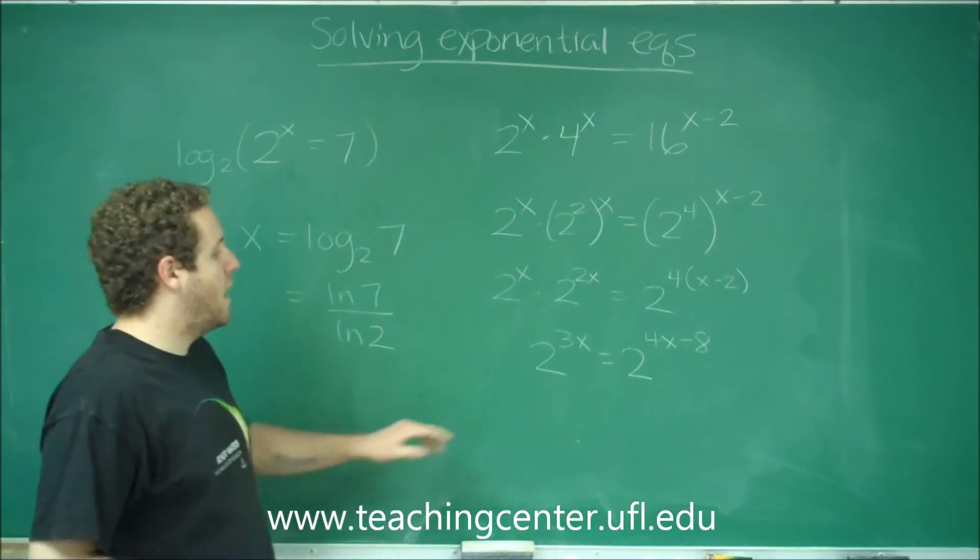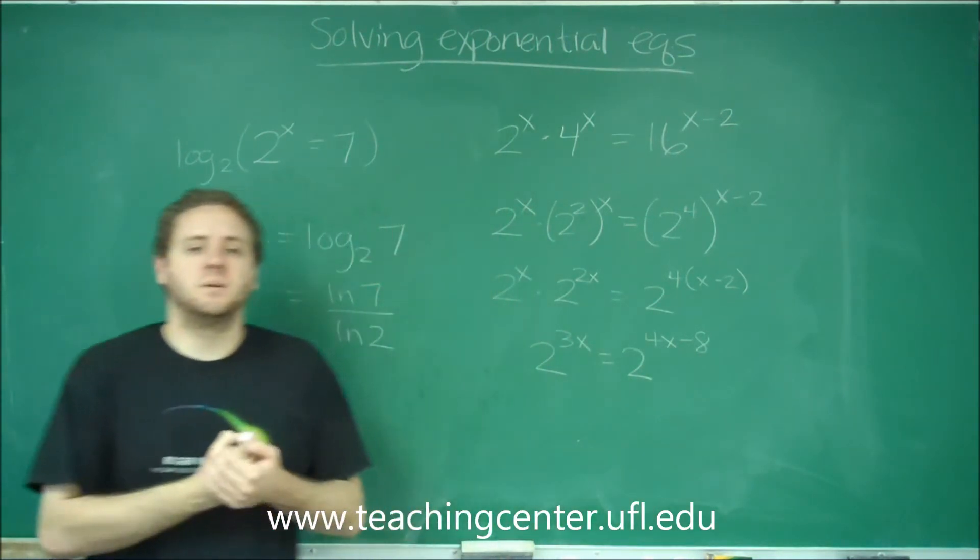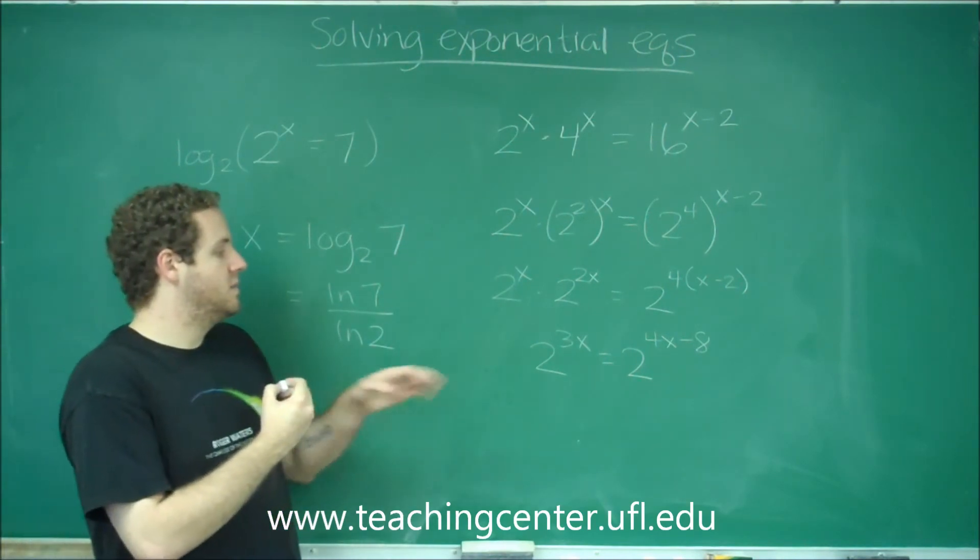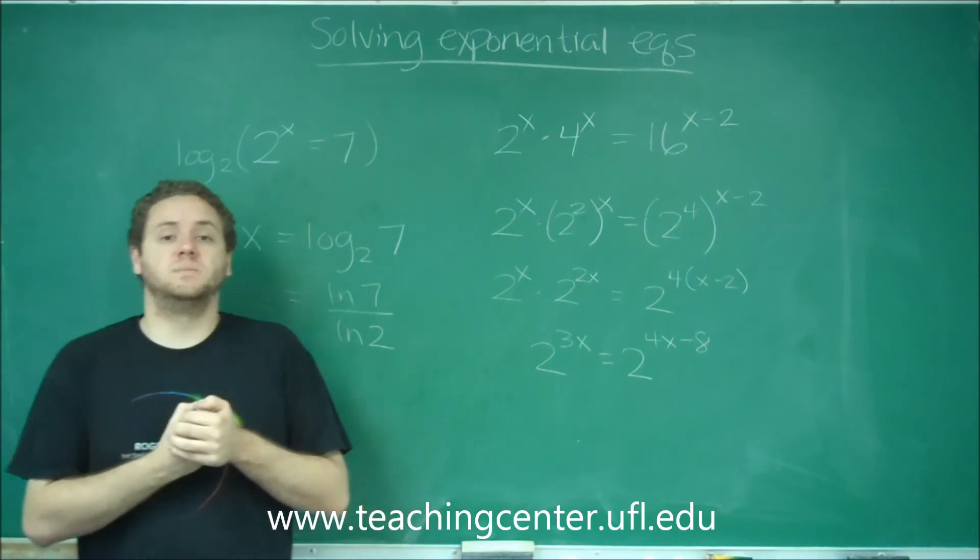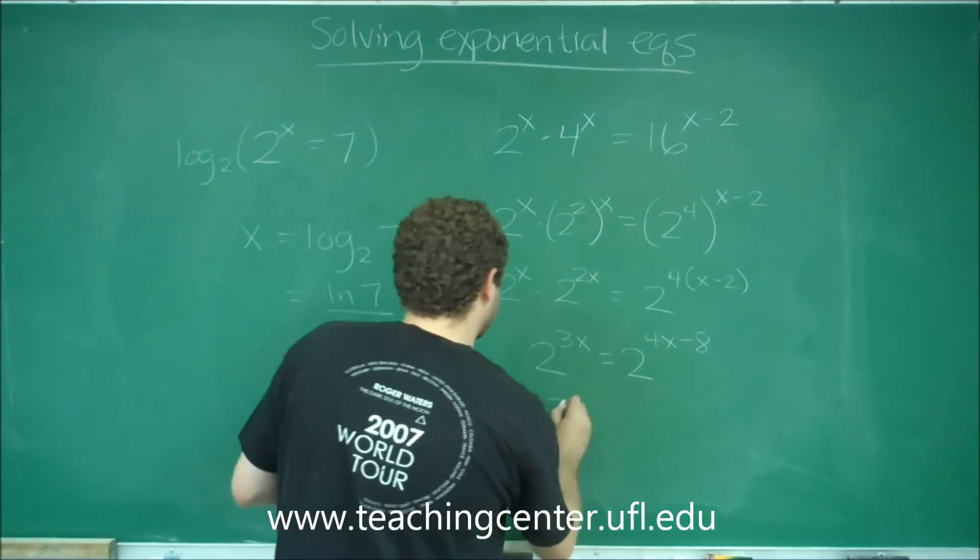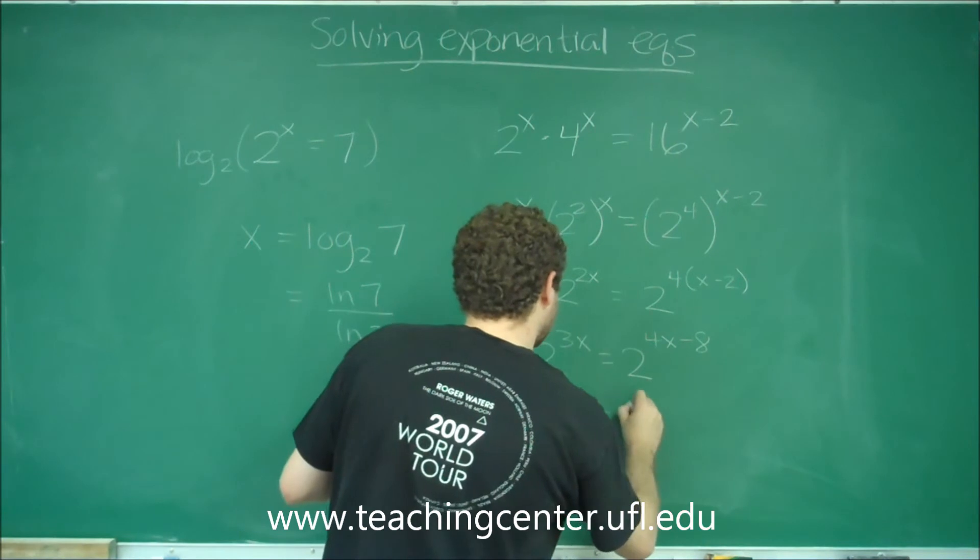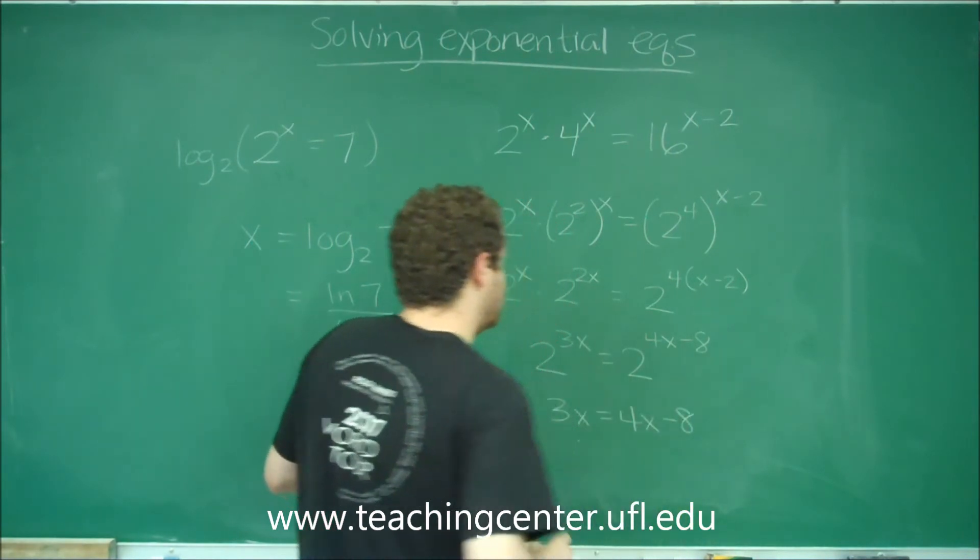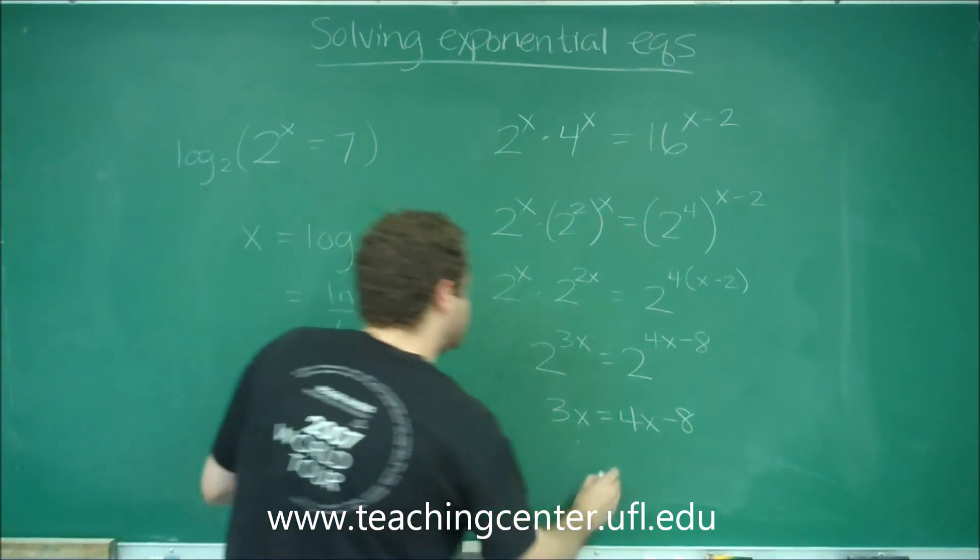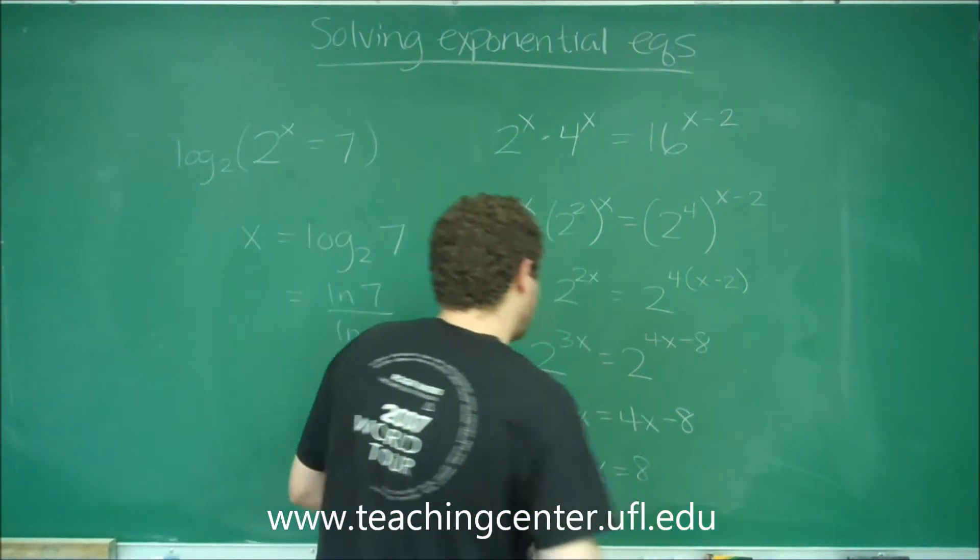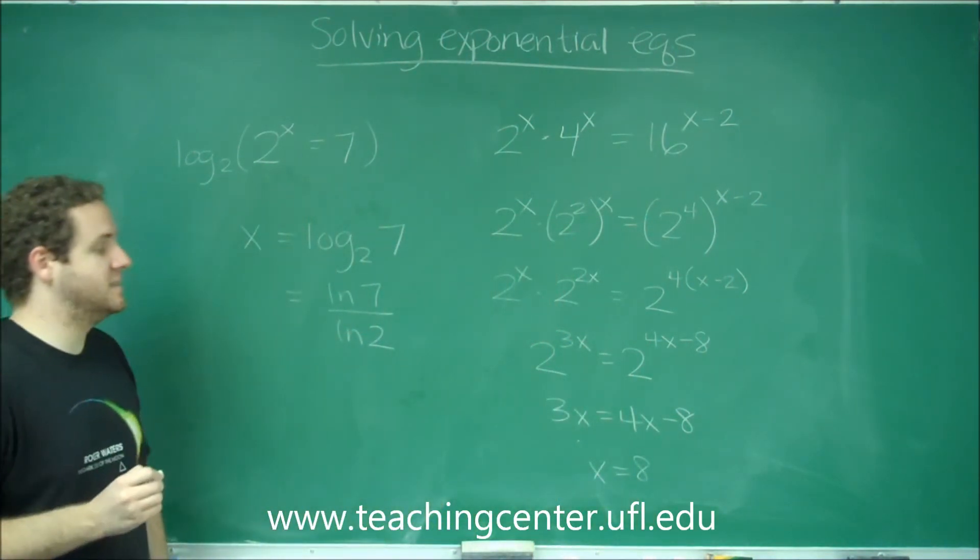You can see here, now both sides are just 2 to some power. So for both sides of this equation to be equal, obviously, just the powers need to be equal. And you can disregard the bases here. So if you solve that now by subtracting 3x and adding 8, you'll get that x is equal to 8.